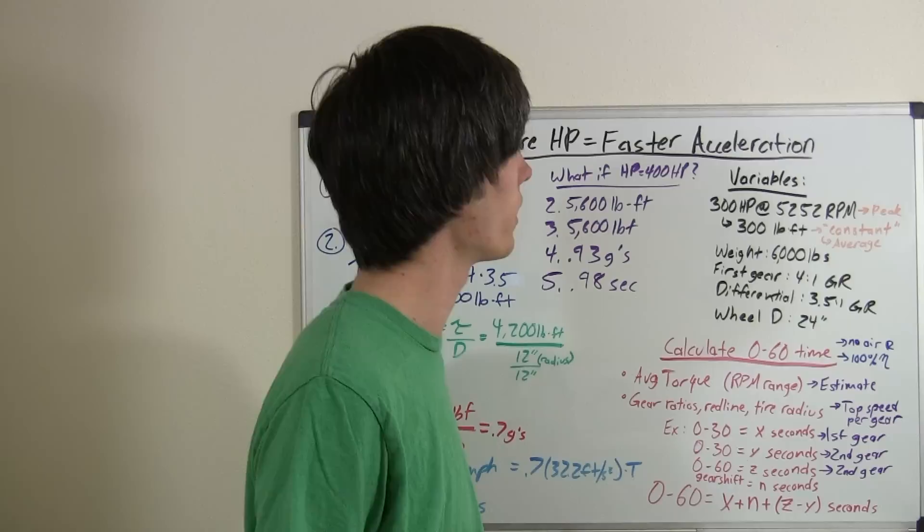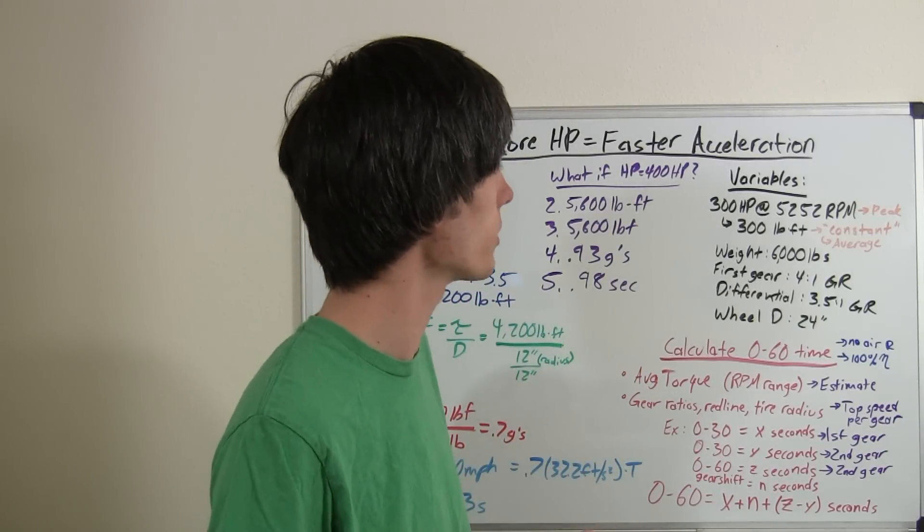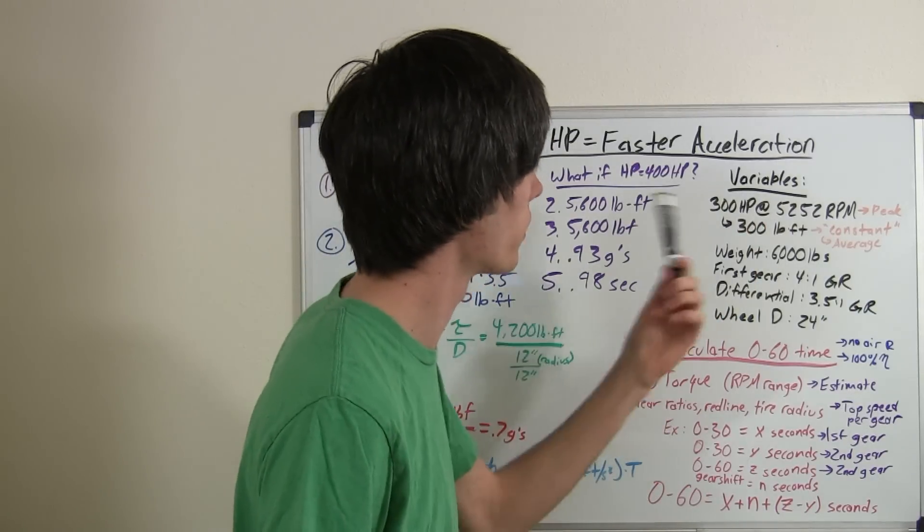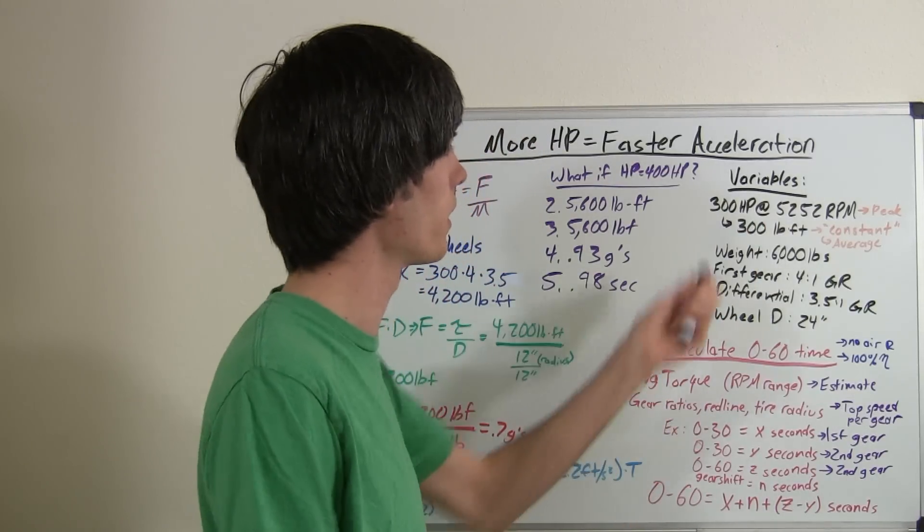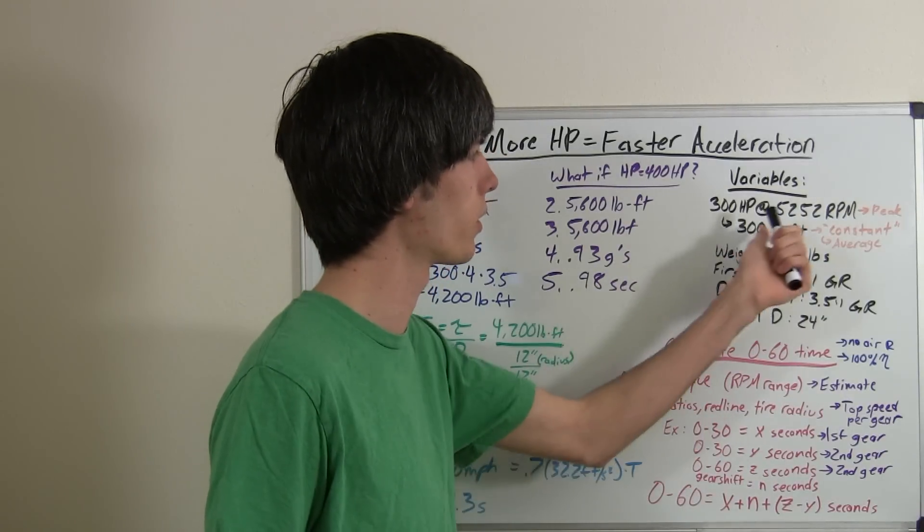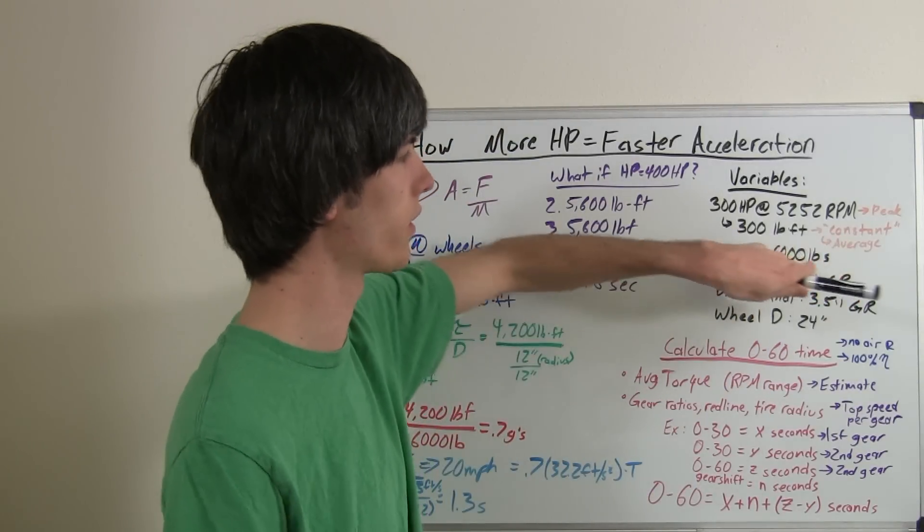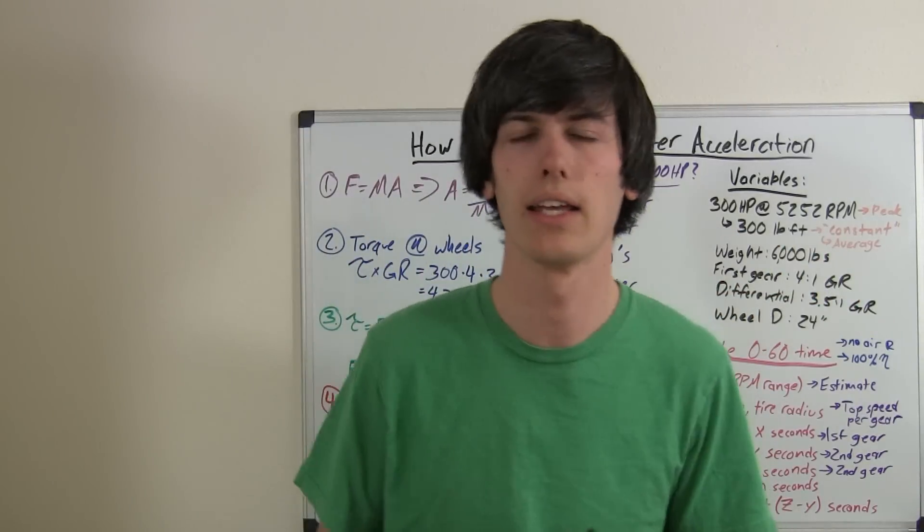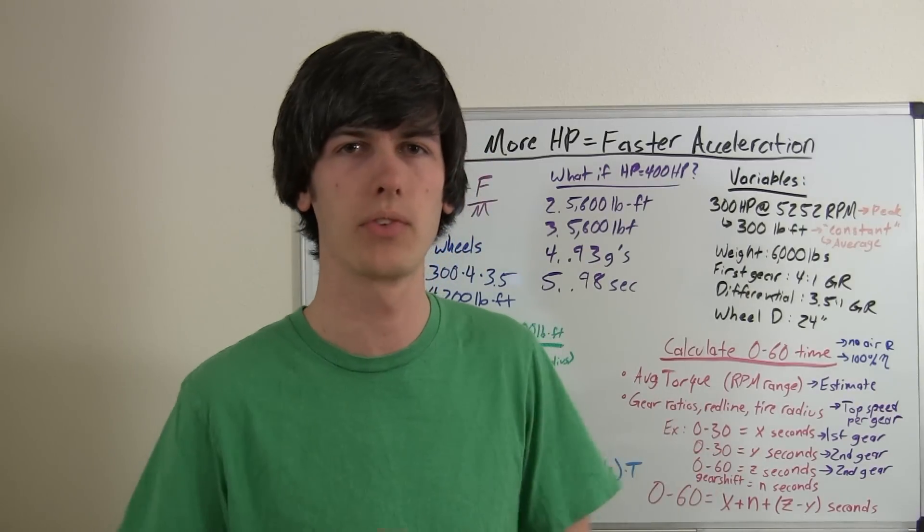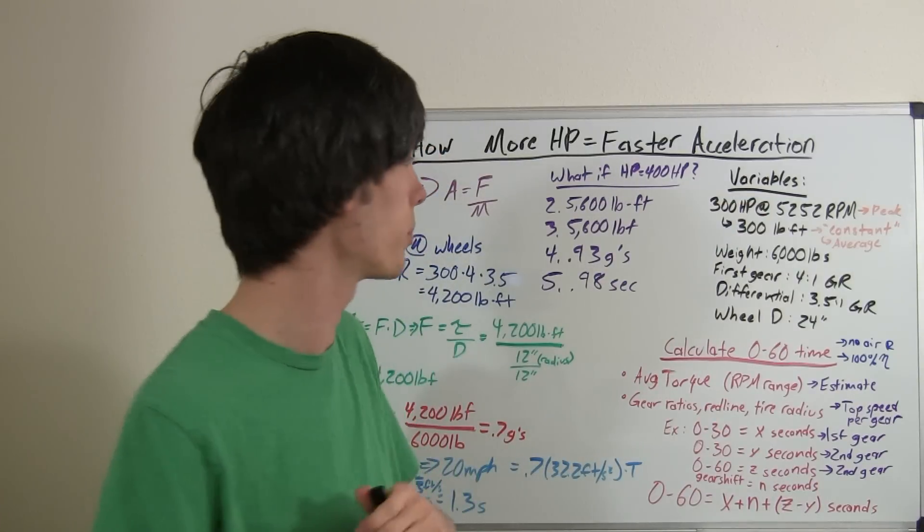So because of that, a video you may want to watch before this is horsepower versus torque. And in that video, I explained where all this is going to be coming from. But basically, 300 horsepower at 5,252 RPM translates into 300 pound-feet of torque. And we're just going to say that this 300 pound-feet of torque is constant across the entire RPM range. That isn't true, really, but for the purposes of this video, we'll just say that that is the average torque across the entire RPM range.